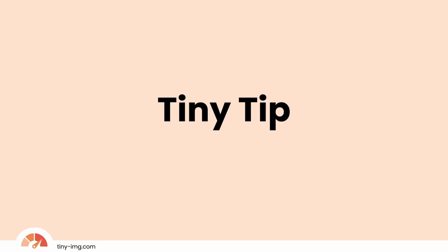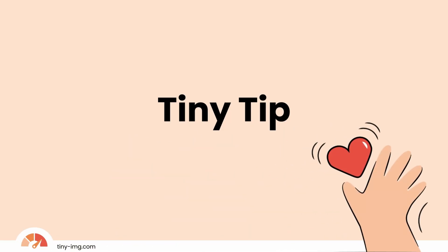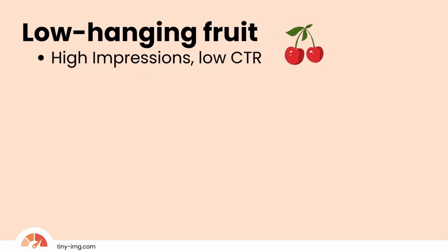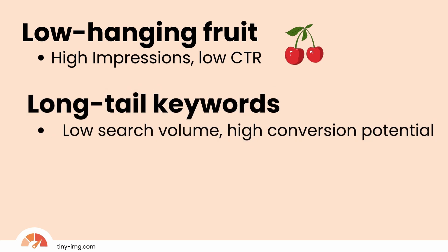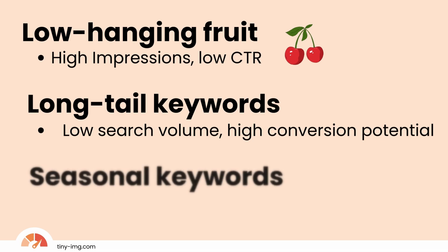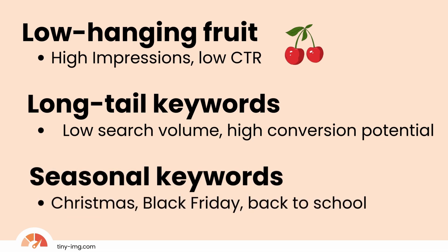Tips for identifying keyword opportunities in Google Search Console. Low hanging fruit: look for keywords with high impressions but low CTR — this indicates optimization opportunities to increase click-through rates. Long tail keywords: discover long tail keywords with lower search volume but higher conversion potential, which help target niche audiences and improve organic visibility. Seasonal keywords: identify seasonal keywords to capitalize on specific times of the year.